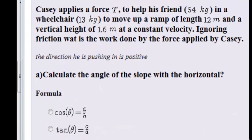In this question, Casey is applying a force T to help his friend, who's 54 kilograms, in a wheelchair. The wheelchair is an additional 13 kilograms. They need to move up a ramp of length 12 meters and a vertical height of 1.6 meters at a constant velocity. Ignoring friction, what is the work done by the force applied by Casey?